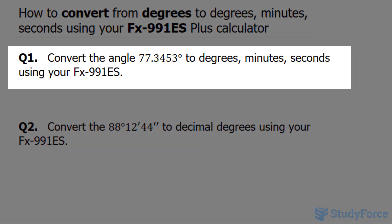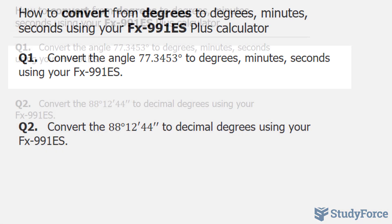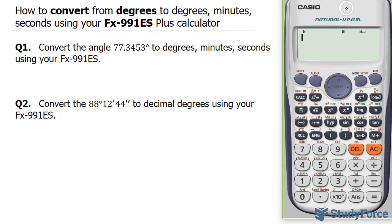Let's start with question one. Convert the angle 77.3453 degrees to degrees minute seconds. Opening up our calculator, and I also want to add the key log here so you can see what I'm typing in.